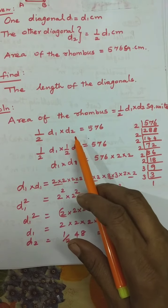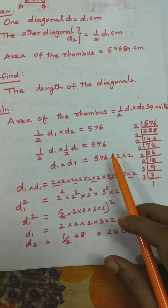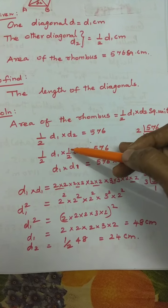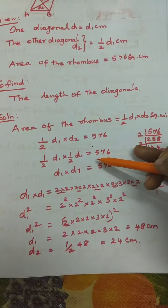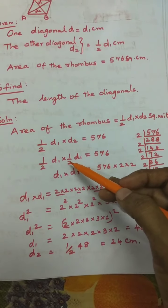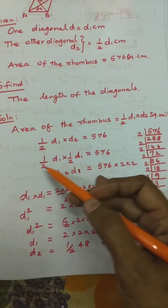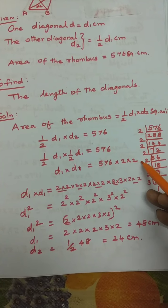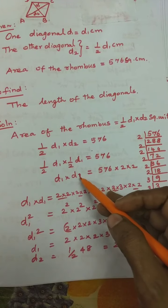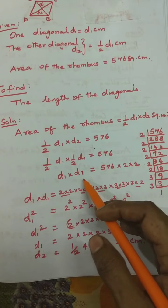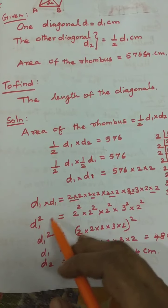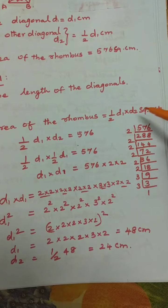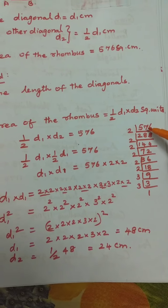Substituting: (1/2) × d1 × (1/2)d1 = 576, so (1/4)d1² = 576, therefore d1² = 576 × 4 = 2304. By prime factorisation: 2304 = 2⁶ × 3².